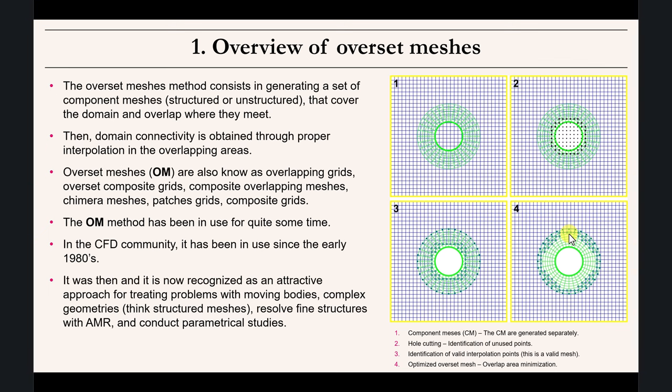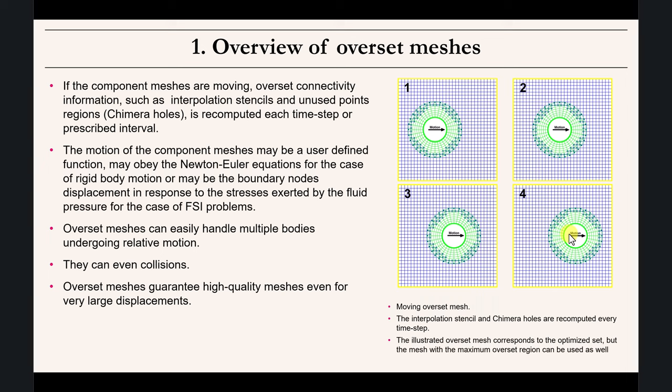Those are the general guidelines. What makes overset meshes very handy is the ability to deal with moving bodies. The previous case just shows the general assembly for a static mesh, which is not very interesting. When the body is moving, at each time step you just need to recompute the interpolation region, which lets you work with very large displacements that were impossible or very difficult using single-block methods.